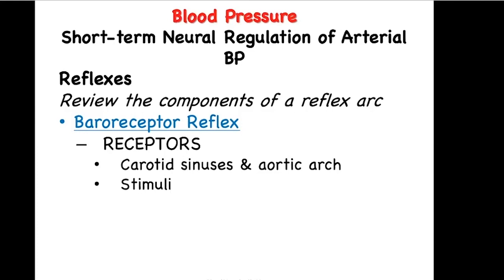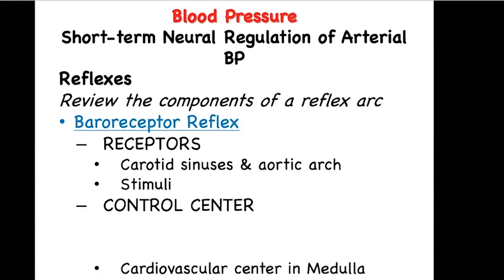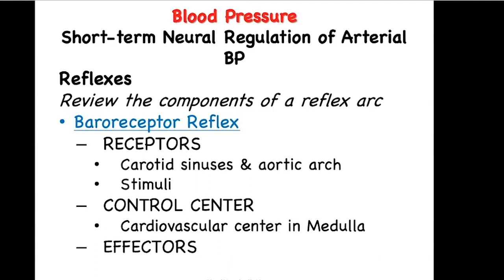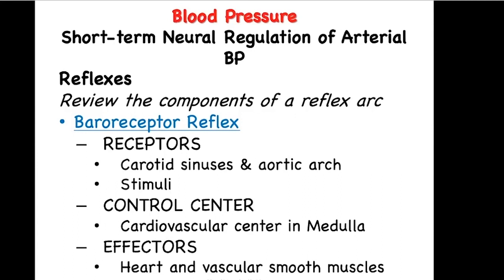An increase in blood pressure is what stimulates the baroreceptors to fire. The control center is located in the medulla of the brain stem, and it is called the cardiovascular center. There is a cardioacceleratory nucleus as well as a cardioinhibitory nucleus, and in addition, a vasomotor nucleus. The cardioacceleratory nucleus will increase heart rate and contractility, while the inhibitory will decrease heart rate. The vasomotor center will bring about vasoconstriction or vasodilation. The effectors of the heart include the SA and AV nodes, the myocardium, and the smooth muscles in the blood vessels.